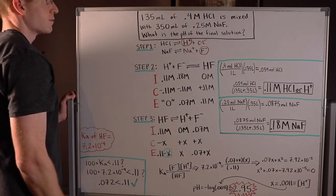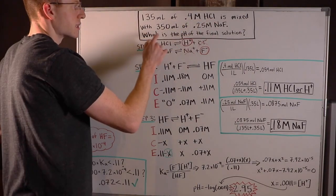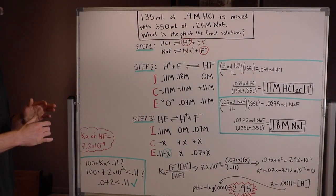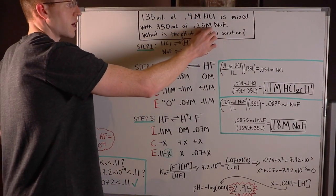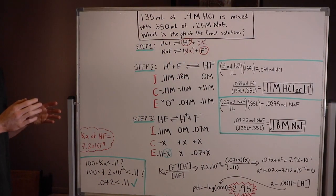In this problem, 135 milliliters of 0.4 molar HCl, a strong acid, is mixed with 350 milliliters of 0.25 molar NaF, a salt. What is the pH of the final solution?